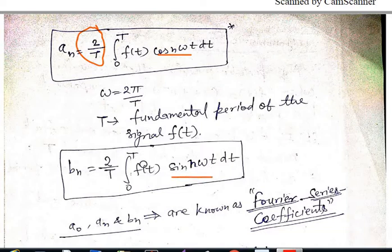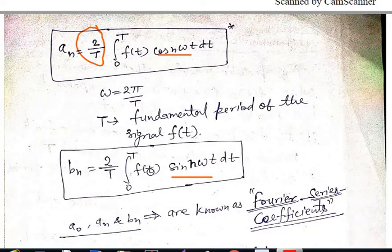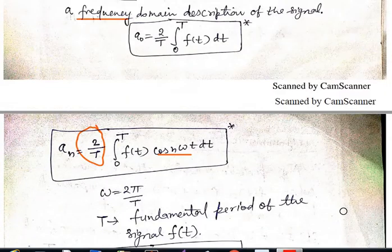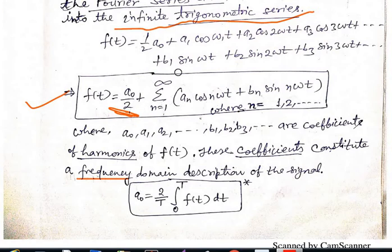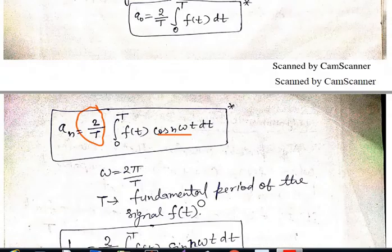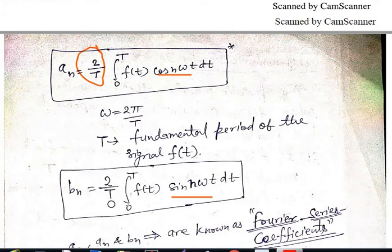Note that this integration is over one time duration equal to the fundamental period T. It can be from −T/2 to T/2, or 0 to T, or T to 2T — any range, but the duration must be one full period T. So bₙ = (2/T) integration from 0 to T of f(t)·sin(nω₀t) dt. The quantities a₀, aₙ, and bₙ are known as Fourier series coefficients for the periodic waveform f(t).